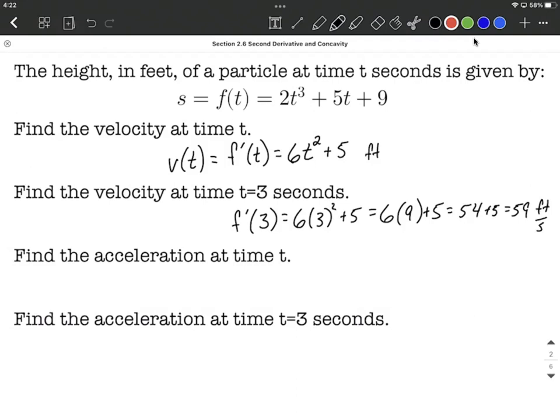Next let's find our acceleration at time t. The acceleration, many times we use a of t to represent acceleration, is the derivative of the velocity function, or v prime of t. In our case, because we've called it f, it's going to be f double prime of t, the second derivative.